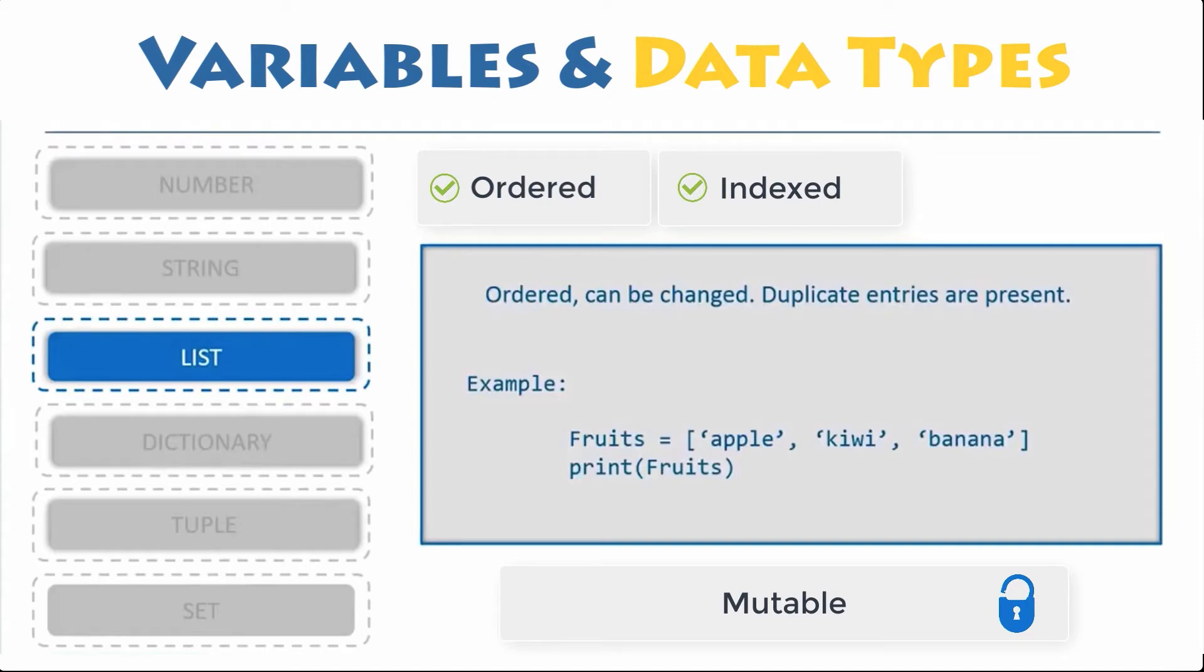The indexing of a list is done with zero being the first index. Each element in the list has its own place, which allows duplicating of elements.